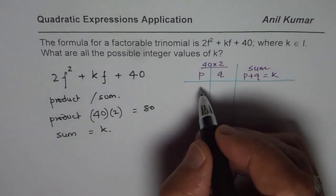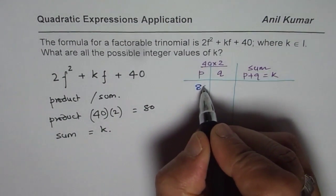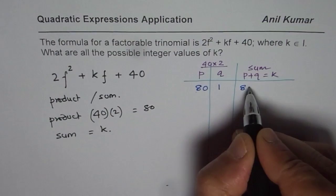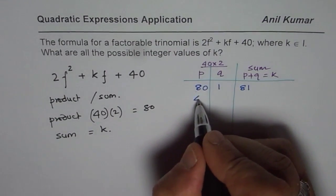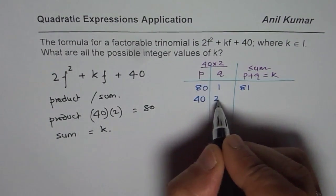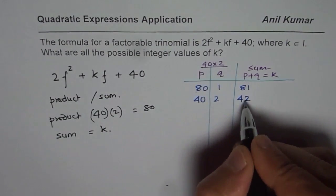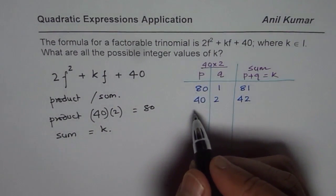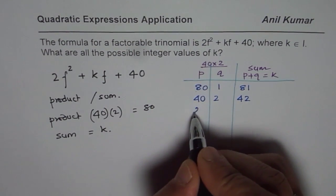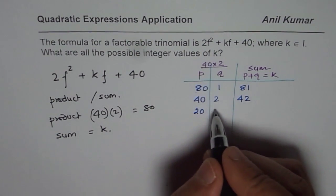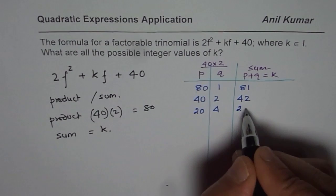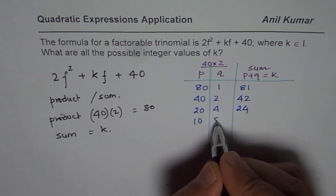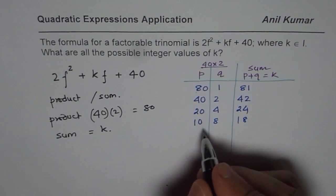40 times 2 is 80. So we can start with numbers like 80 and 1 — when you add them up you get 81. Then we have 40 and 2, and when you add them up you get 42. So these are possible values of k.